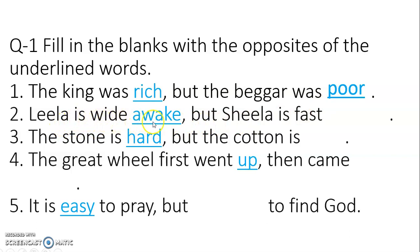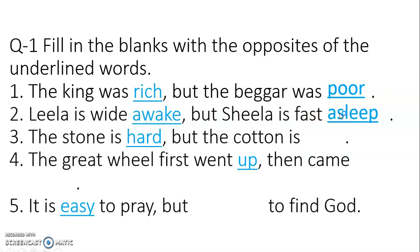Number two: Lila is wide awake — she did not sleep, she is wide awake — but Sheila is fast ___. You have to write the opposite of awake. The opposite of awake is asleep. Awake means she did not sleep, and here fast asleep means she is sleeping.